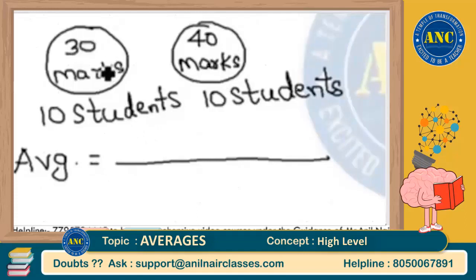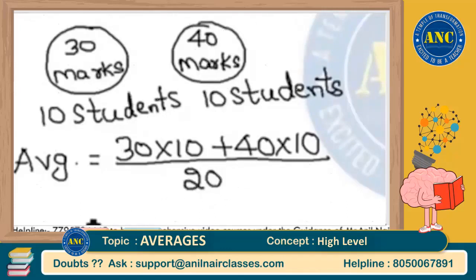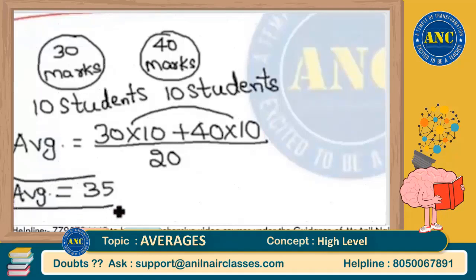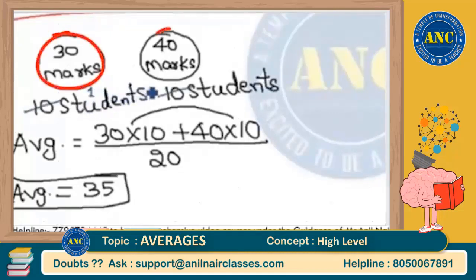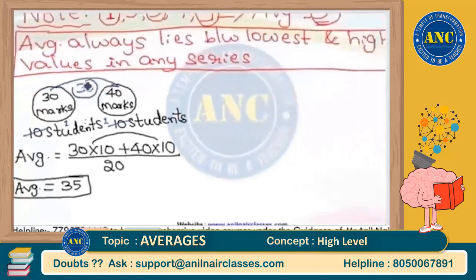So 30 marks is the average marks of section A with 10 students, so it is 30 into 10 plus 40 into 10 students in section B, divided by total number of quantities, which is 10 plus 10 equals 20. Simplifying: 300 plus 400 is 700 divided by 20 is 35. The average marks of the two sections is 35. Since both sections have an equal ratio of students, average is simply the middle value of 30 and 40, which is 35.